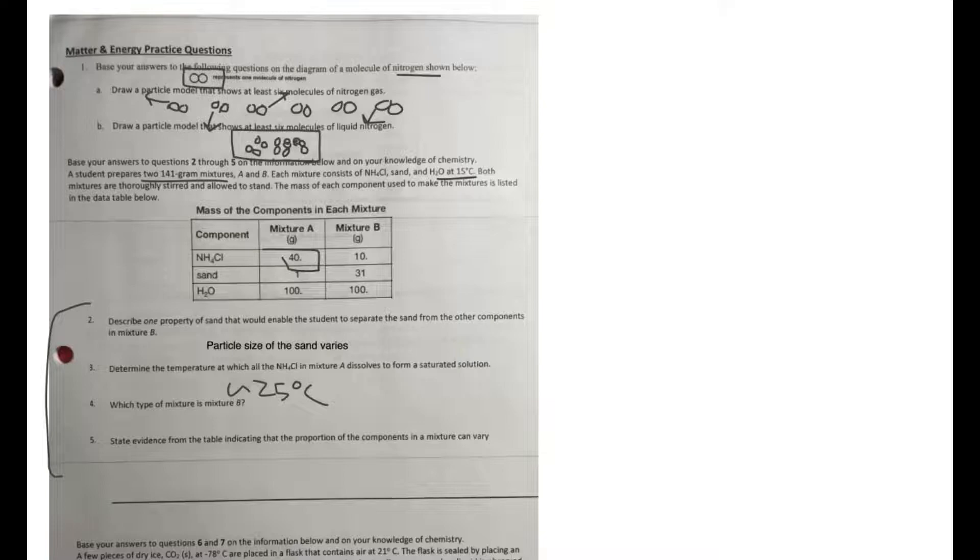Which type of mixture is mixture B? Mixture B here has 10 grams of NH4Cl, 31 grams of sand, and 100 grams of water. So it's either homogeneous or heterogeneous, and this one is heterogeneous. I don't think I spelled that right, but it's heterogeneous because it is not the uniform distribution of molecules. Sand has a different density than water, has a different density than NH4Cl, so it's not going to be an equal distribution, versus let's say we have like salt water. That salt is going to evenly dissolve in that water, and when you draw the particle diagrams, you can see that.